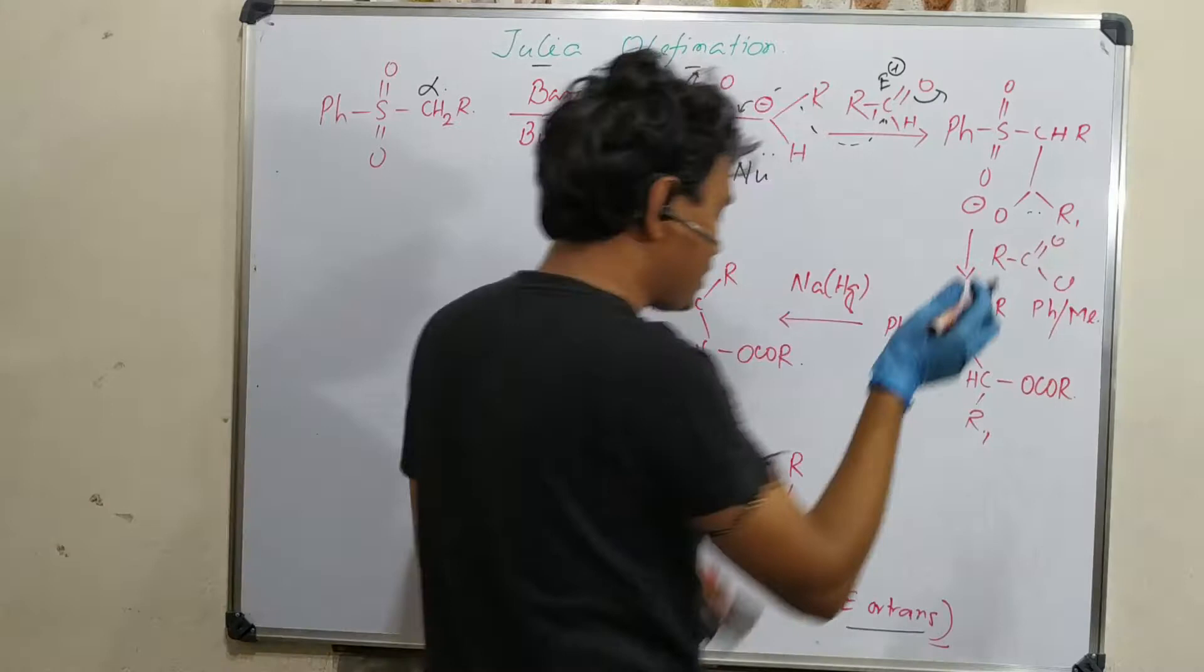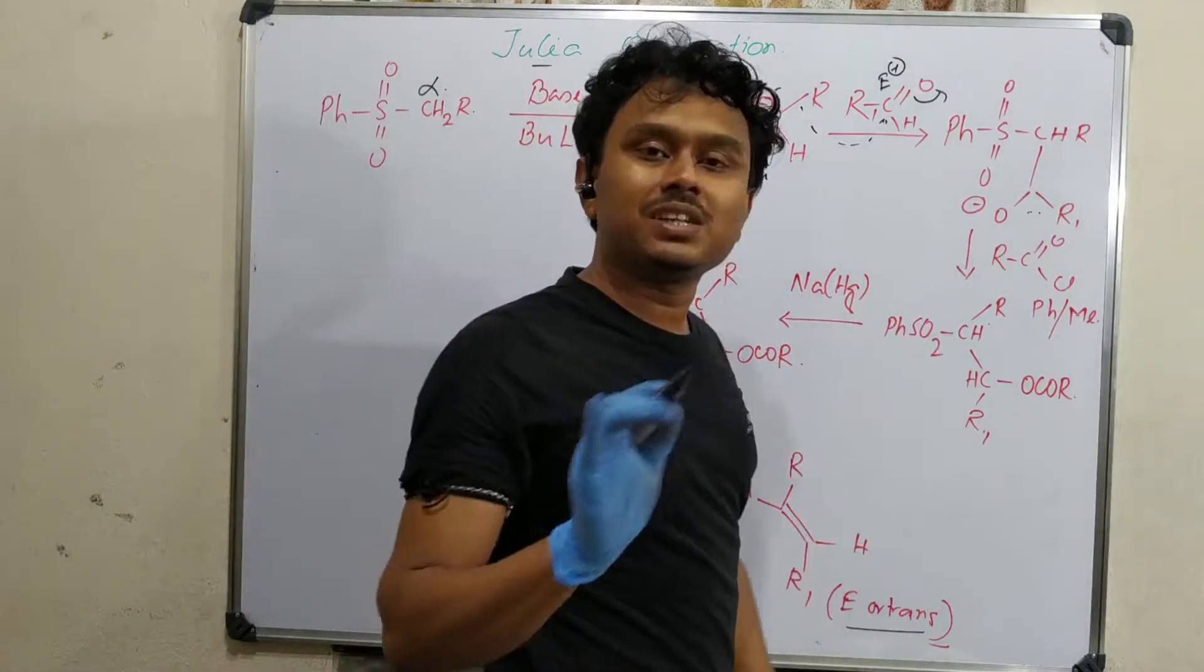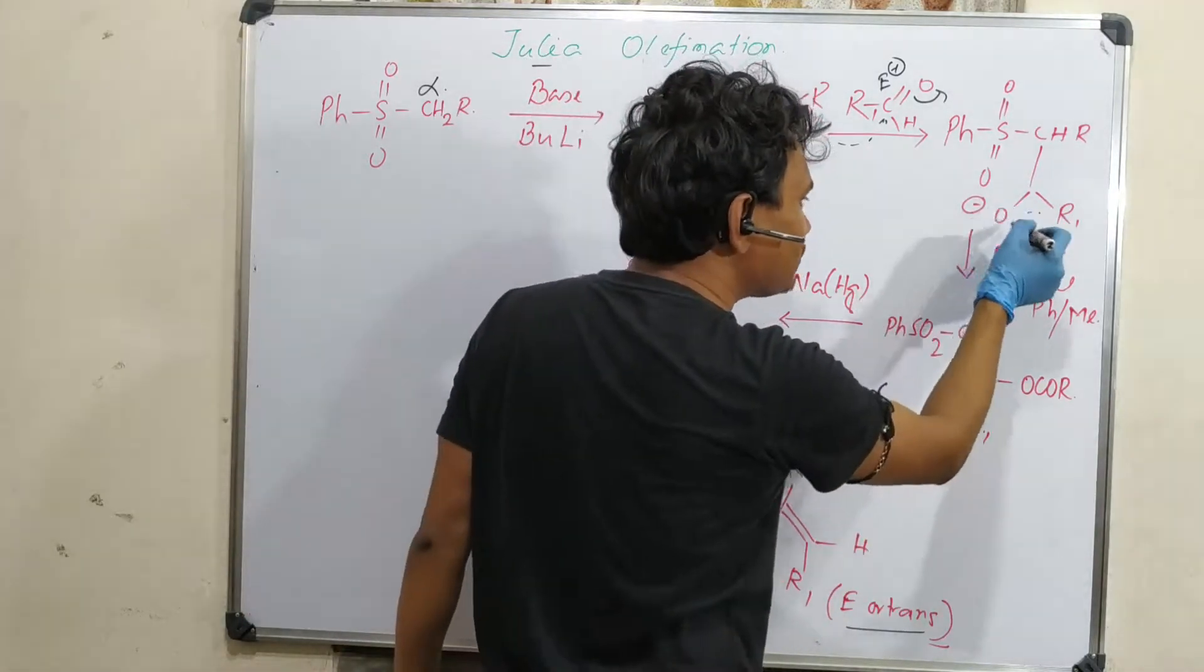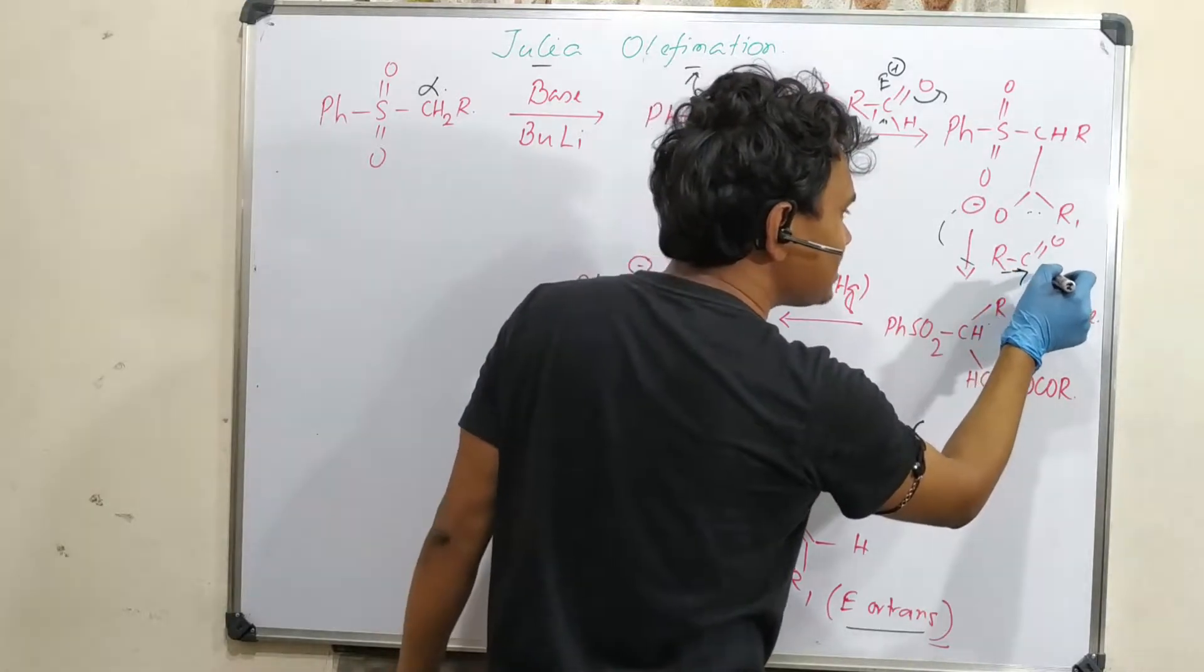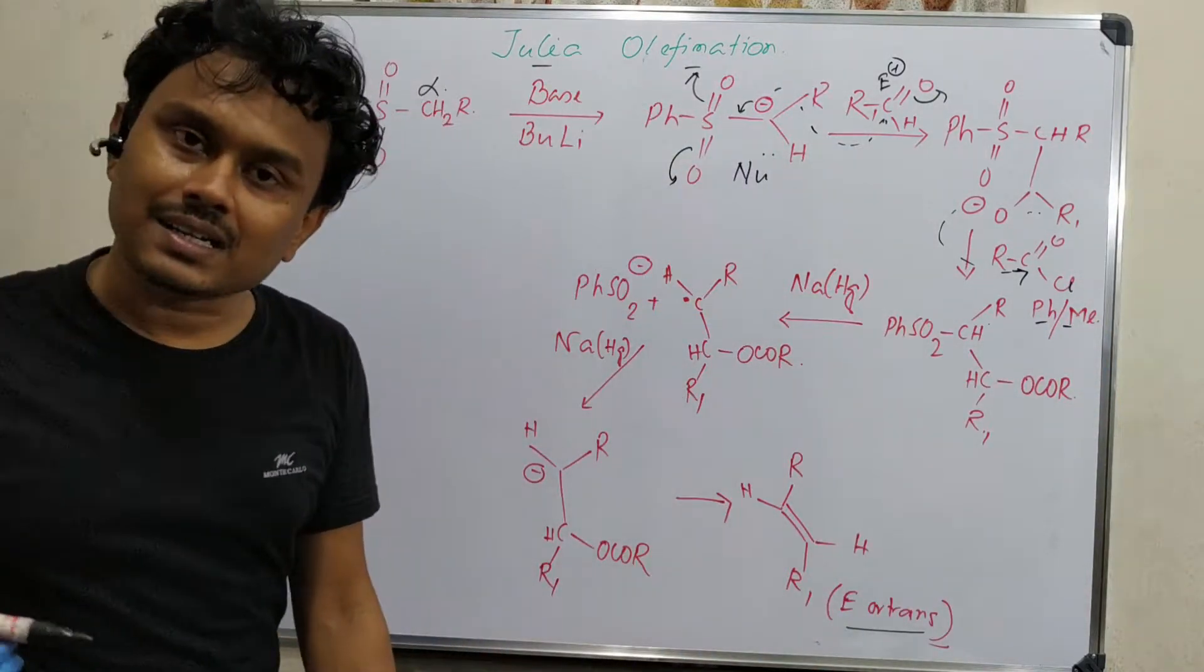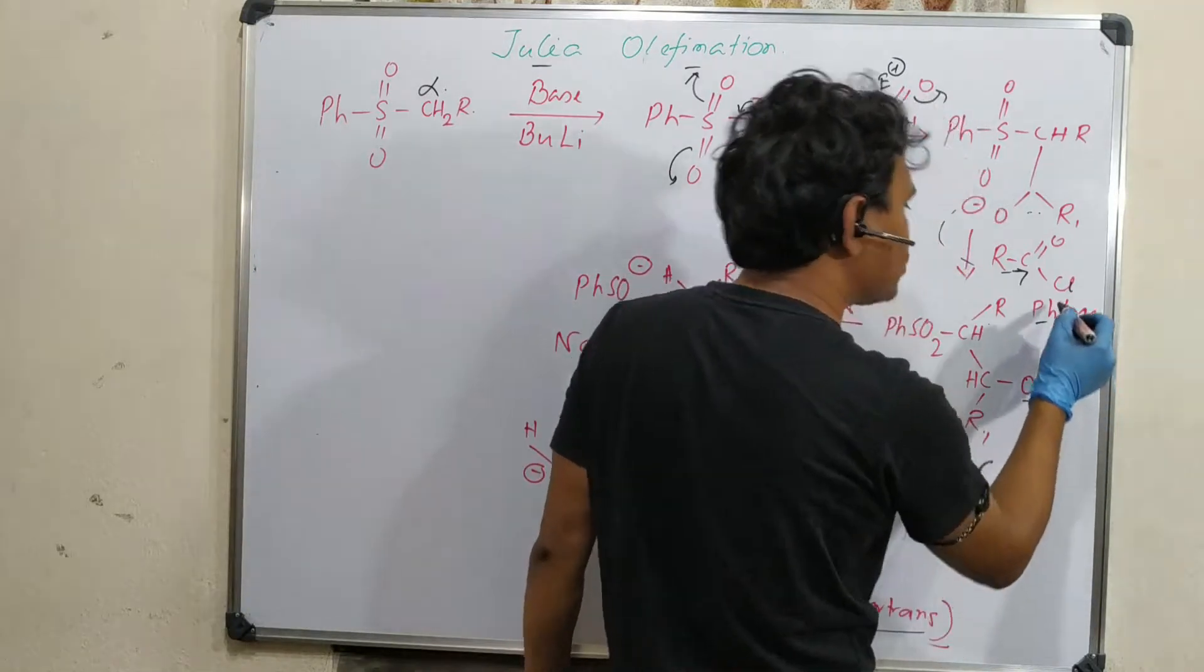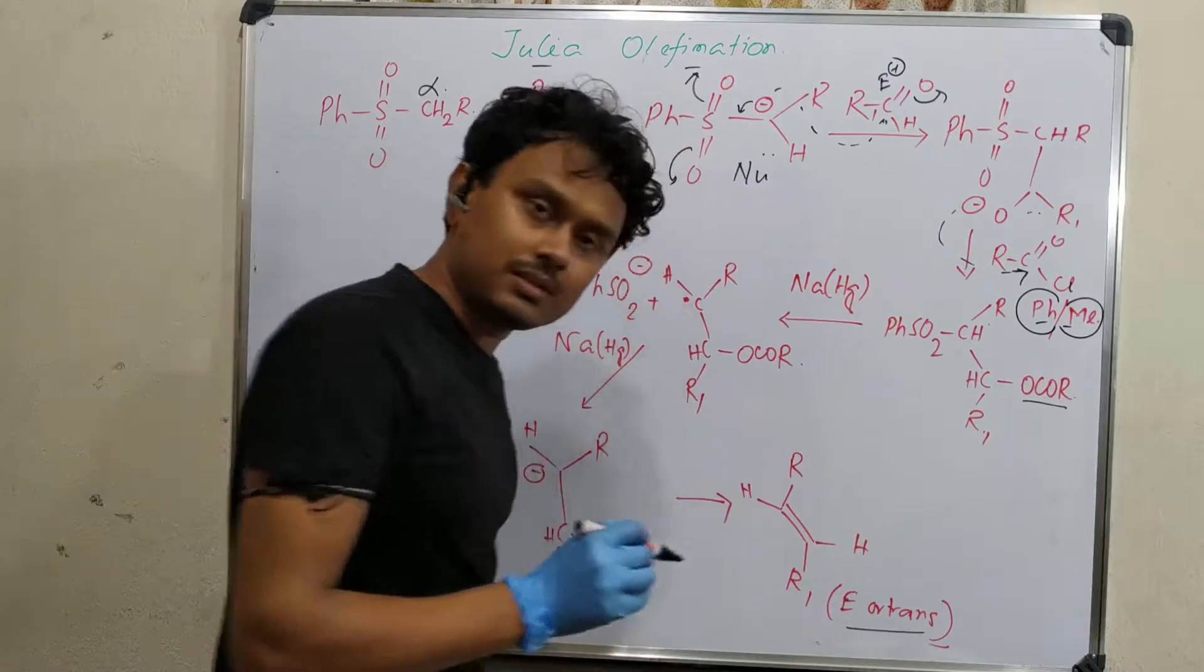Generally we do protonation, but here we are going to do acylation of this O minus. This O minus will react with the electrophilic center, acyl chloride, and produces this ester. The acyl could be benzoyl chloride or acetyl chloride, anything.